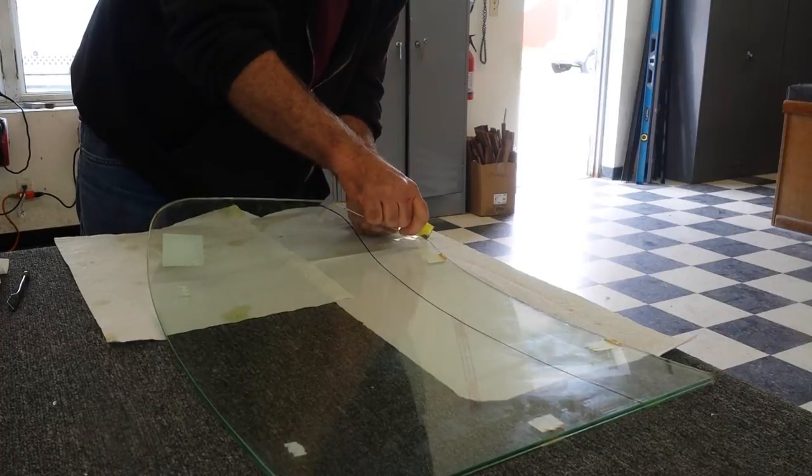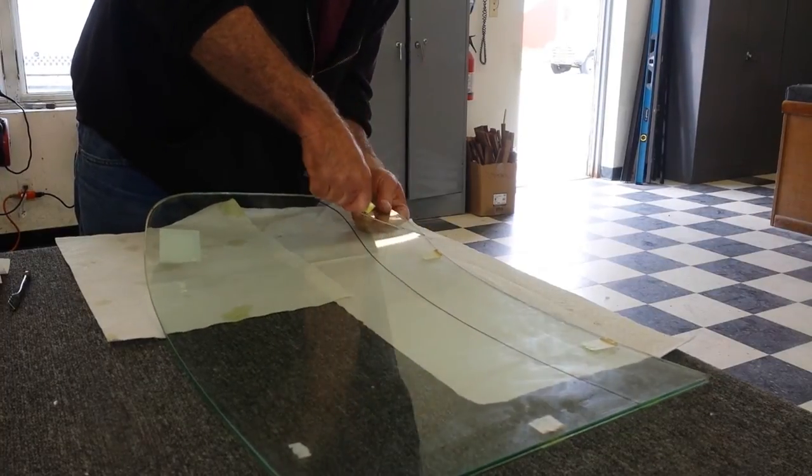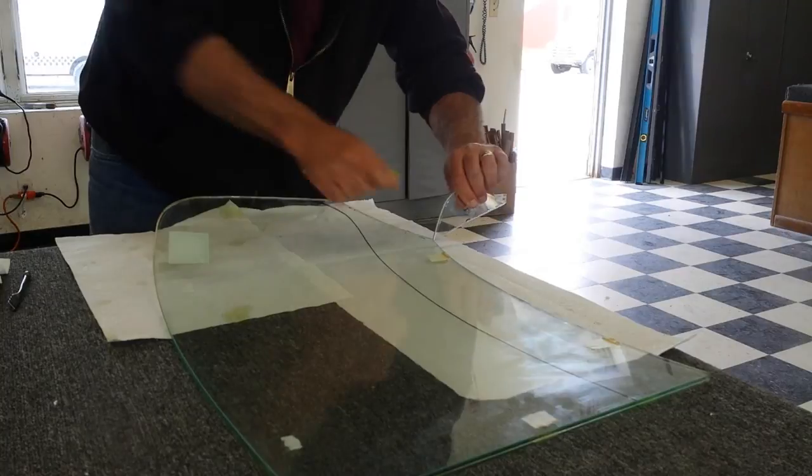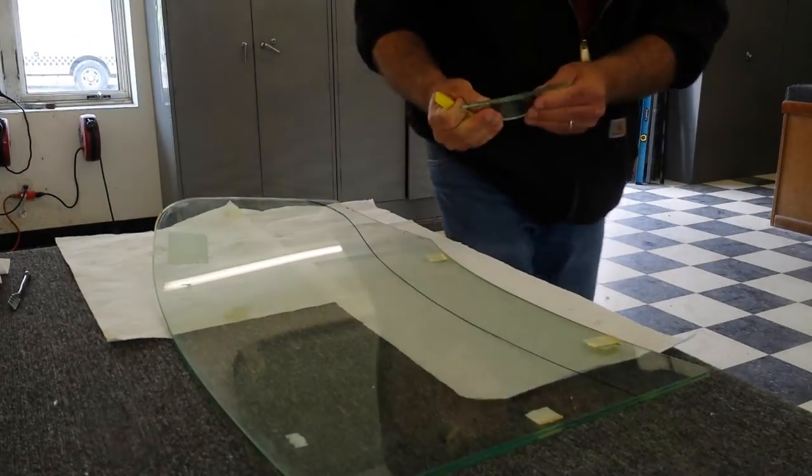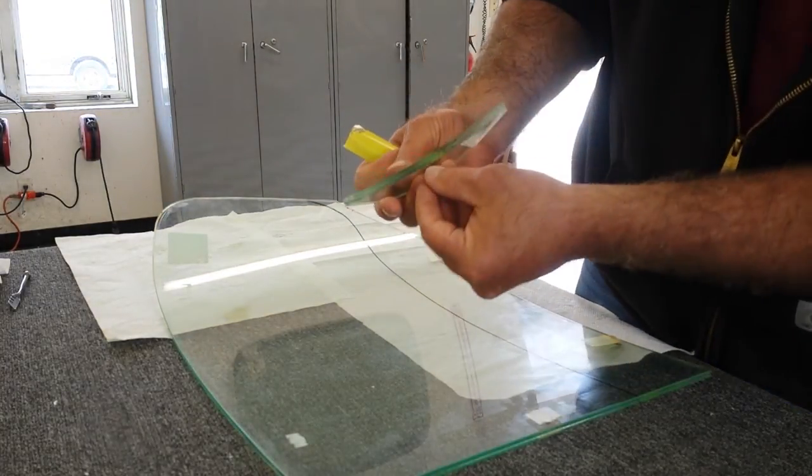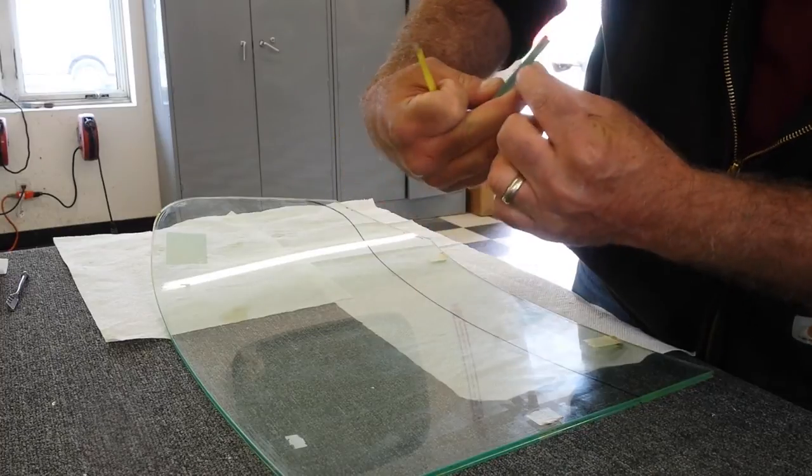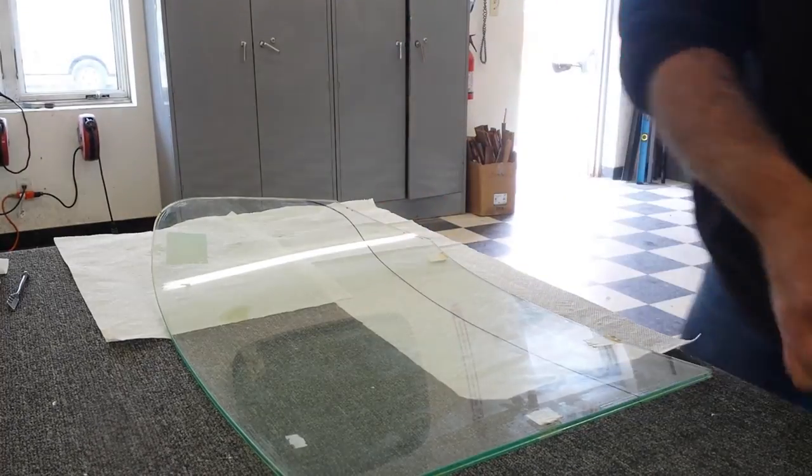Now you want to open that up, stick your piece in there, and then just cut your laminated piece of plastic right out of the center there. You can see two pieces of glass and a piece of plastic in between them. So we've got that out of the way.